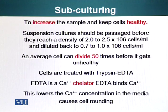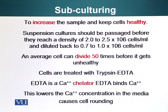Suspension cultures generally should be passaged before they reach a density of 2 to 2.5 million cells per ml, and they should be diluted back to 0.7 to 1 million cells per ml. An average cell, as I've mentioned, can divide 50 times before it gets unhealthy.